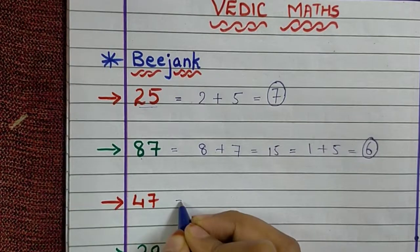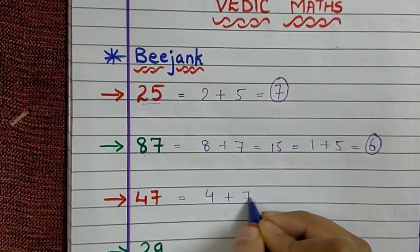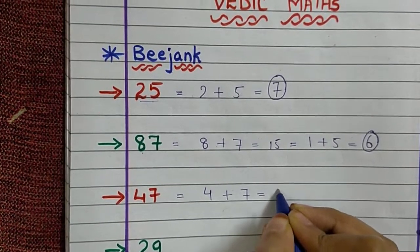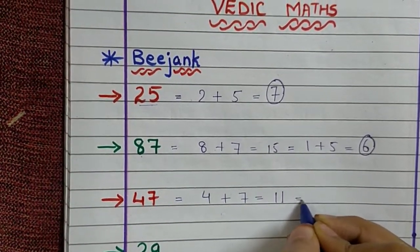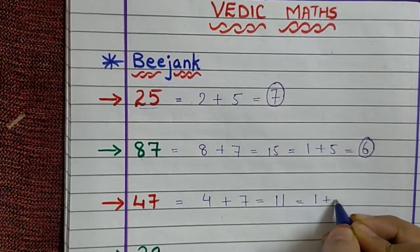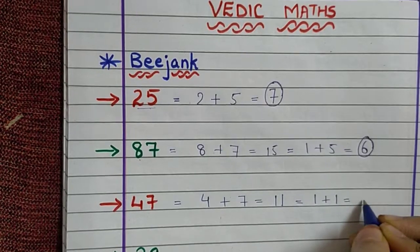Third number is 47. 4 plus 7 is equal to 11. And again 1 plus 1, because the Beejank should be a 1 digit number only, not 2 digit number. 1 plus 1 is 2. So the Beejank of 47 is 2.